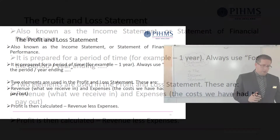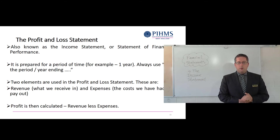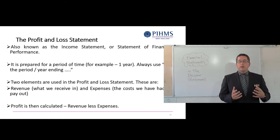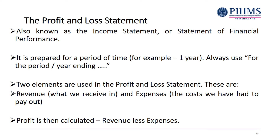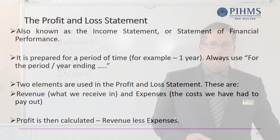There are two elements used in the profit and loss statement. These come down to the equation to calculate profit: revenue — what we receive in — and expenses — the costs we've had to pay out. From those two elements we are able to calculate a profit, or it might be a loss. It's always the same equation: revenue less expenses.